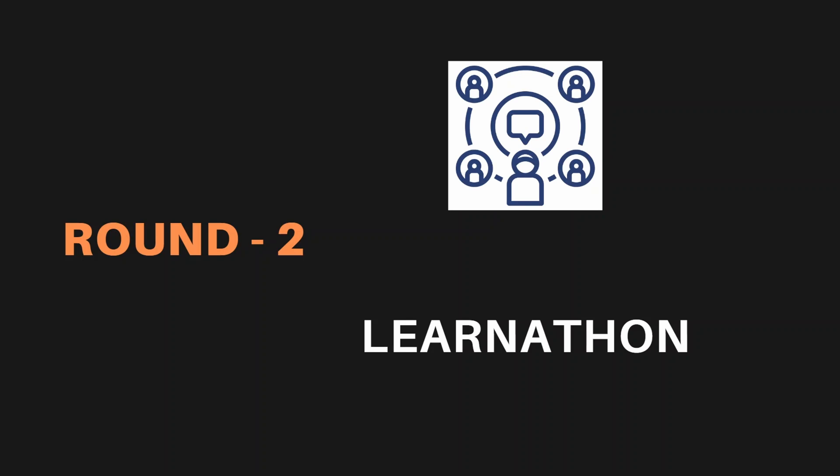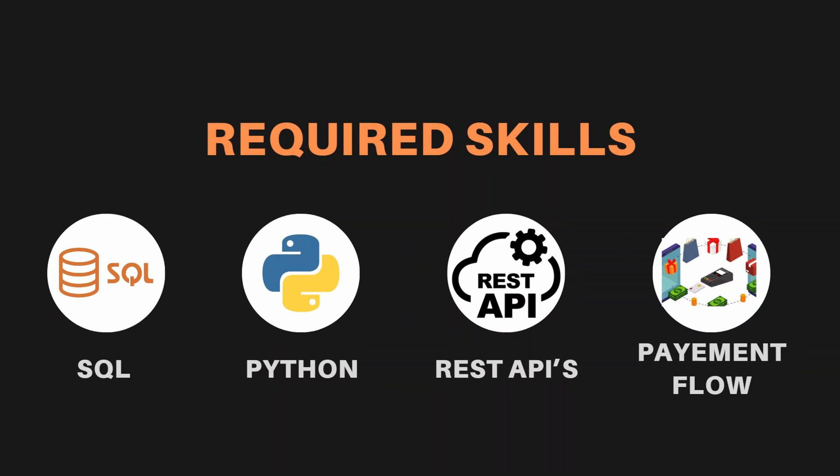The second round is Learnathon. Learnathon checks your ability to learn a lot in a very short period of time. It was conducted offline at their office — I participated in Learnathon at the main branch in Koramangala, Ripple for Stallion building. You may also be required to go to the main office to attend. Good communication skills are also needed, as you interact with tech buddies who are already working at Juspay as Product Solution Engineers.